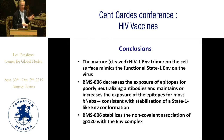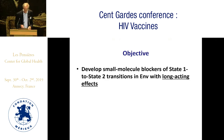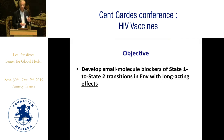To summarize: the mature cleaved HIV envelope trimer on the cell surface mimics the functional state 1 envelope on the virus. BMS-806 decreases exposure of epitopes for poorly neutralizing antibodies and maintains or increases exposure of epitopes for most broadly neutralizing antibodies, consistent with stabilization of a state 1-like conformation. BMS-806 also stabilizes the non-covalent association of GP120 with the envelope complex. Because these BMS compounds appear to enrich for state 1 conformations, we thought they might be useful if we could treat immunogens with them to present state 1 in a more enriched fashion to the immune system.